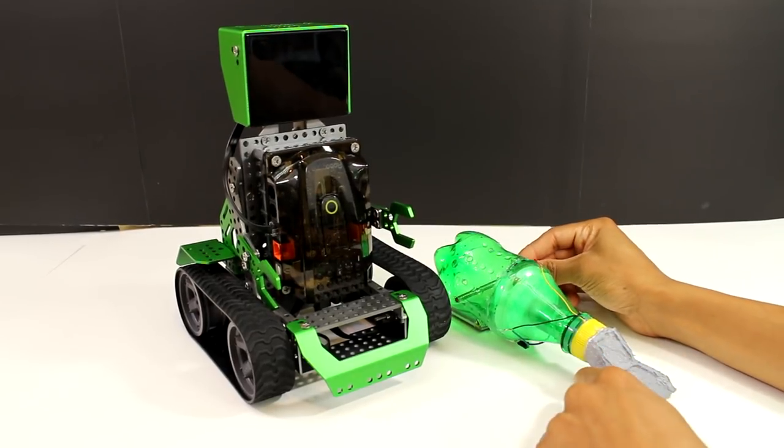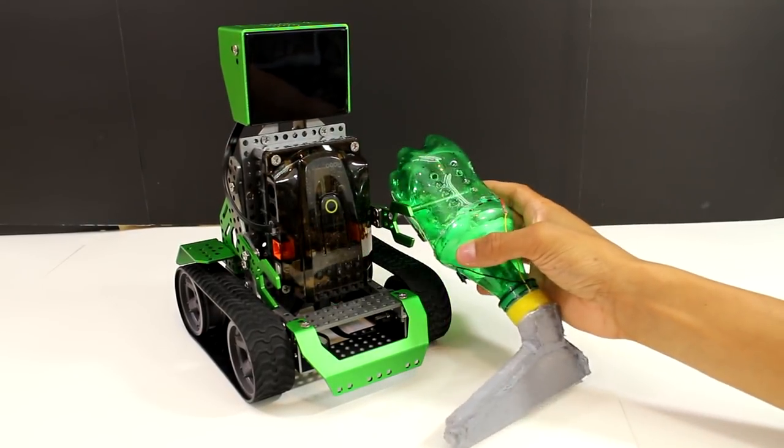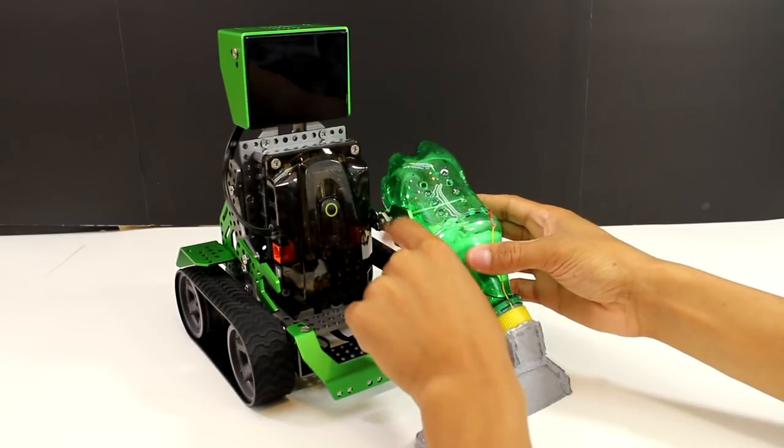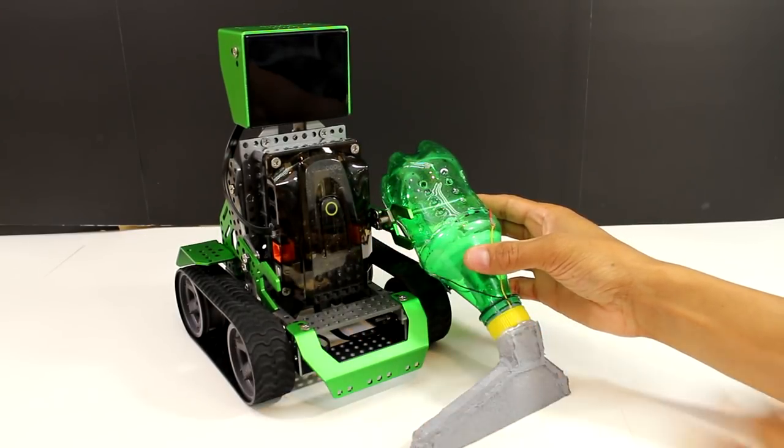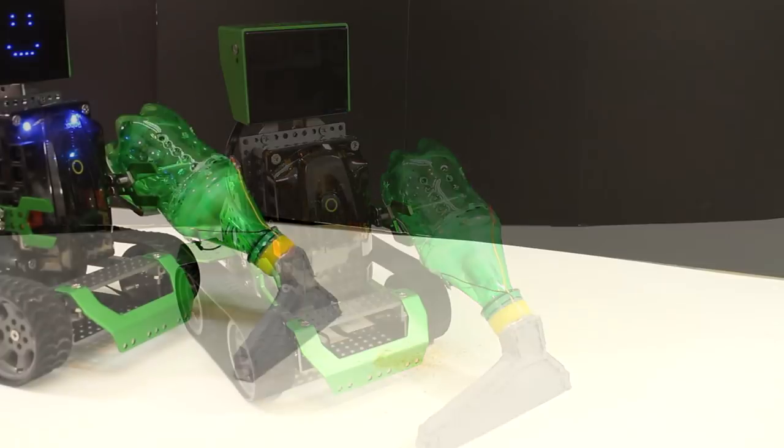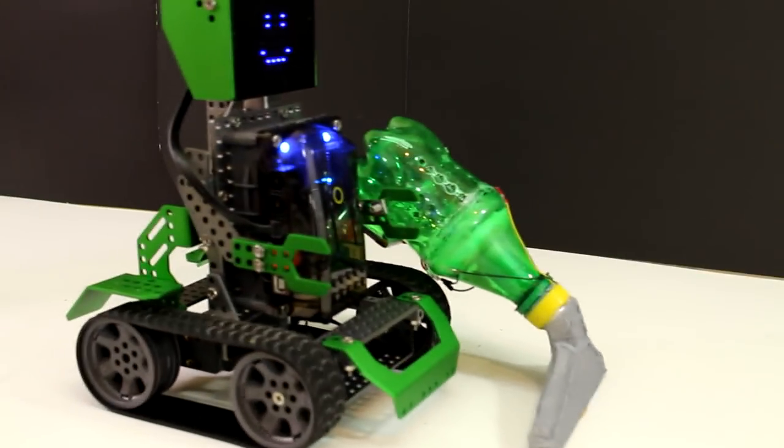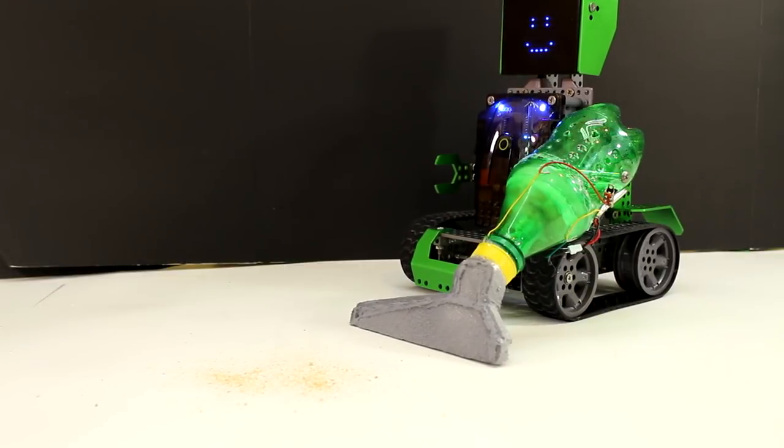Now all I need to do is put a bolt through the vacuum cleaner and attach it to the robot. Now I can turn the vacuum on and control the robot from my phone. It is actually a ton of fun controlling this robot, and it actually works pretty well for vacuuming the floor.